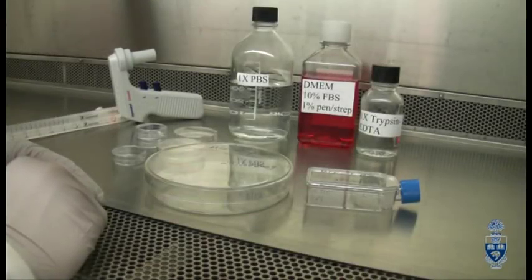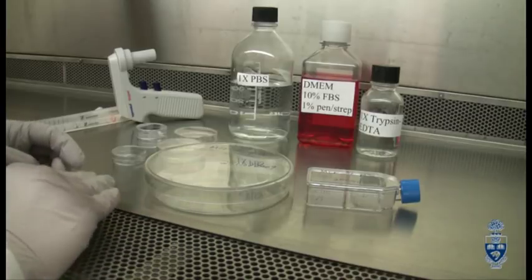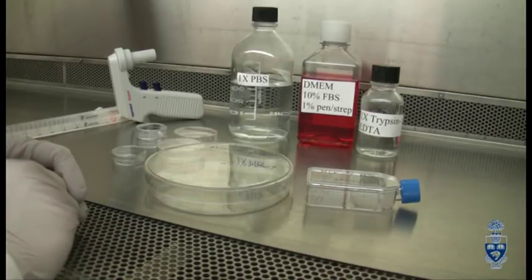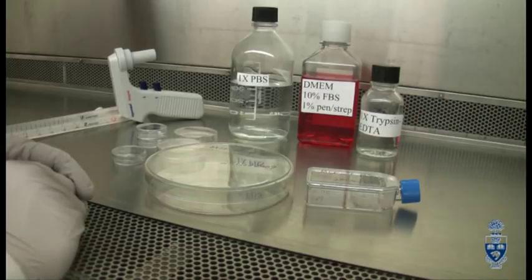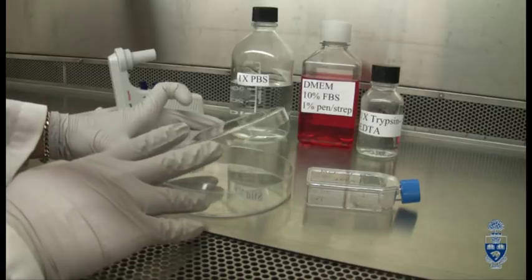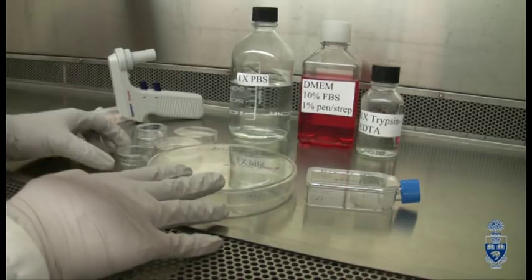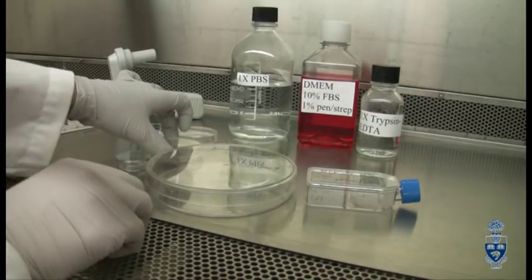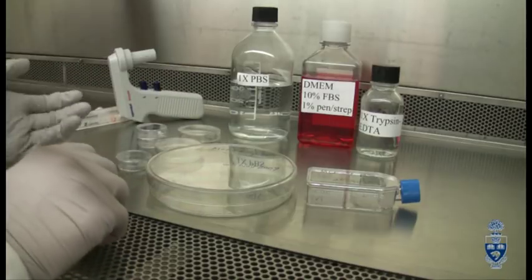The MCF7 breast cancer cell lines are adherent cells, meaning that they adhere to the bottom of the culture vessel that they are being grown in. As you can see, there are multiple examples of culture vessels. This one here is a cell culture dish. The lid comes off and there are multiple sizes that can be used depending on the nature of your experiment.